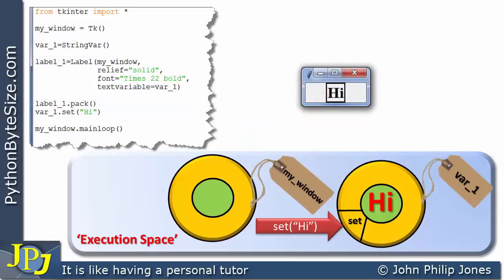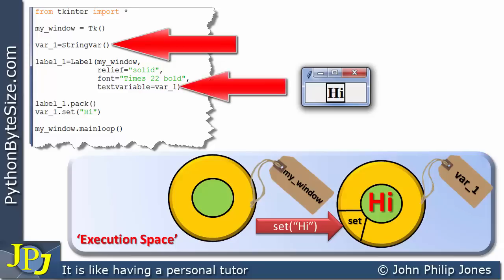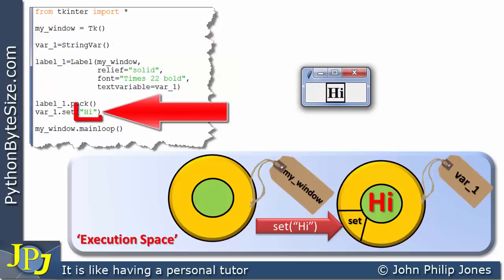If you have a program that performs some calculations and you wish to display the result on a label within a window, the approach is: perform the calculations, store the result in an appropriate variable, make sure the result is converted to a string, create a StringVar as shown here, ensure it's tied to the label using textvariable, and then on the set line, put the name of the variable storing the result of the program's calculations instead of 'hi'.